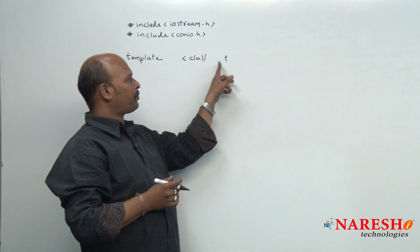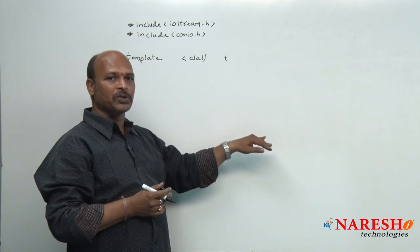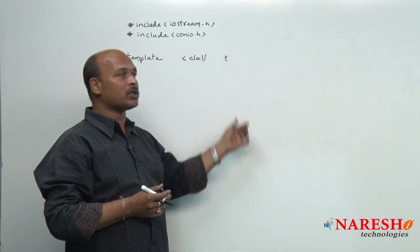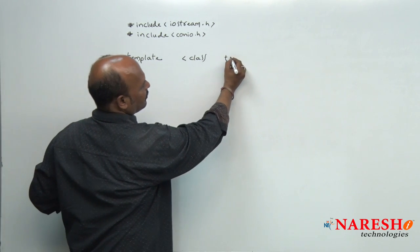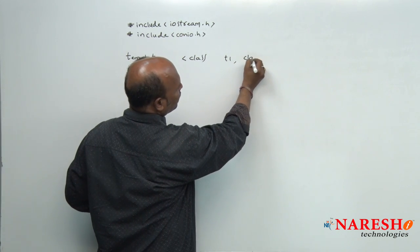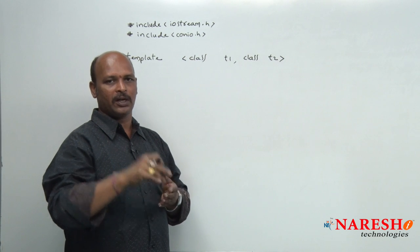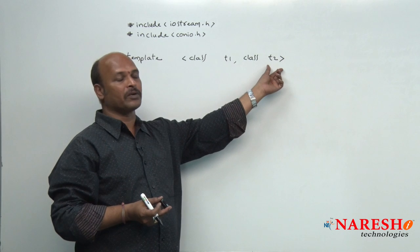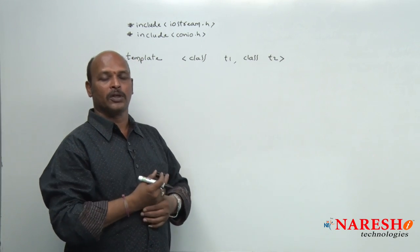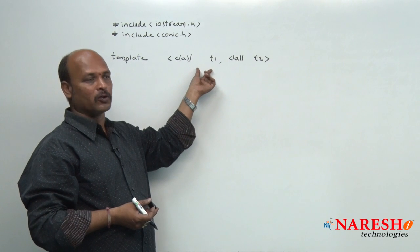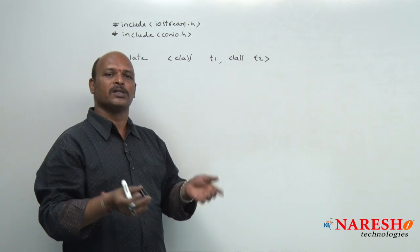Now, if we create only one placeholder, it can store only one type of argument — if the user sends integers, T becomes integer; if float, T becomes float. But if our requirement is different data types, then we use class T1 comma class T2. Now, if the user sends integer and float, T1 becomes integer and T2 becomes float. They can hold same or different types.